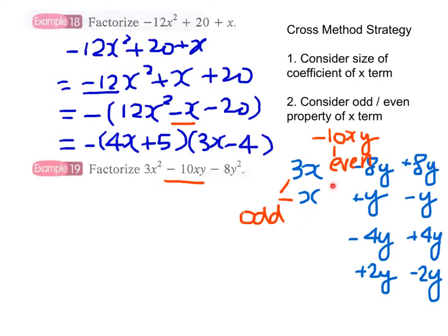So 3x and x should pair up with even y-factors, because only an odd number multiplied by an even number will get an even number. If we choose factor pairs like y times y, we have odd numbers, and therefore we'll never come up with an even middle term.